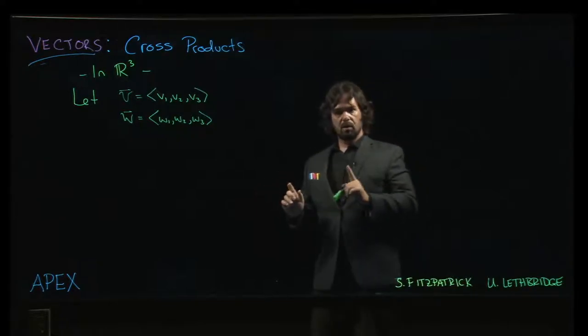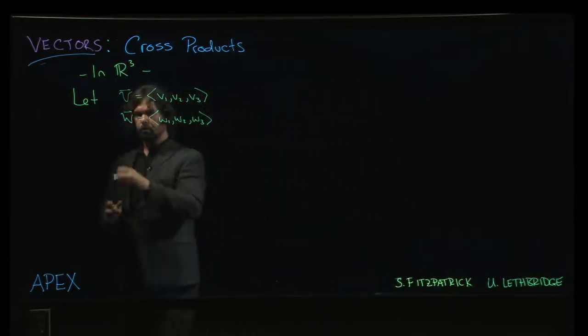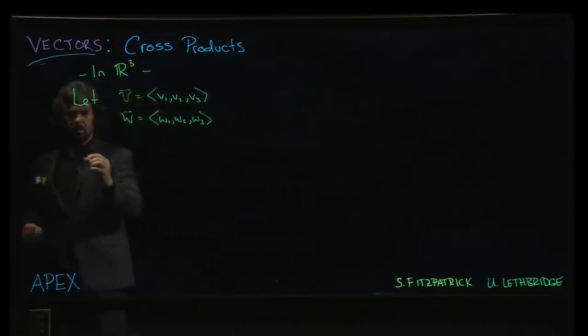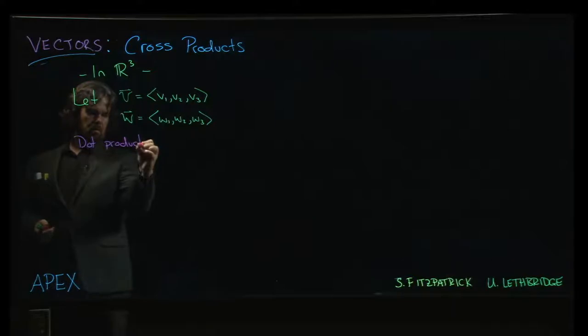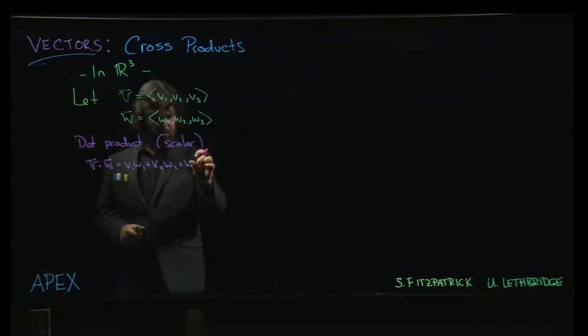So let's just take two three-dimensional vectors and think about what we can do with them. We know that one thing we can do is the dot product, which is a scalar. We can do v dotted with w, and we get v1w1 plus v2w2 plus v3w3.